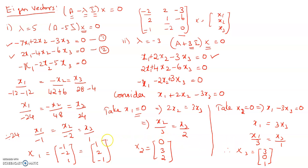So the first eigenvector is (1, 2, minus 1) for lambda equals 5. The second eigenvector is (0, 3, 2) for lambda equals minus 3, and the third eigenvector is (3, 0, 1) for lambda equals minus 3. Thank you.